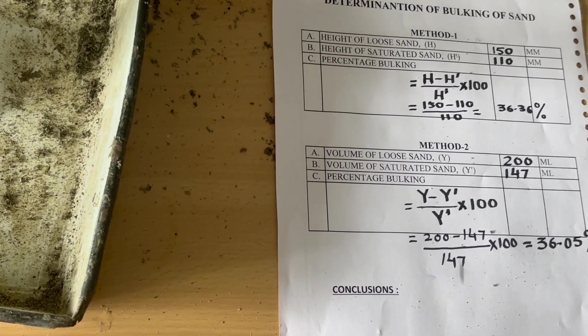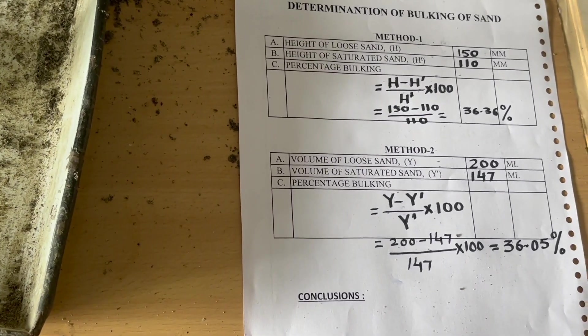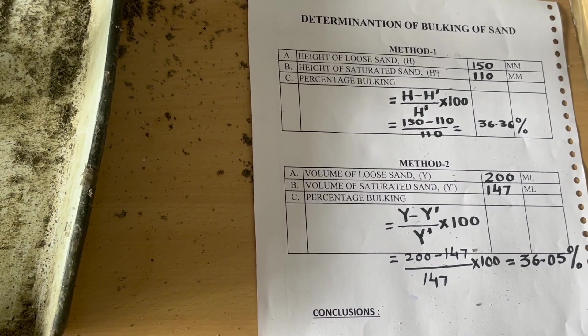Now we can say what is bulking. Bulking is the increase in volume of sand due to surface tension.